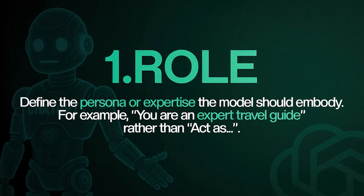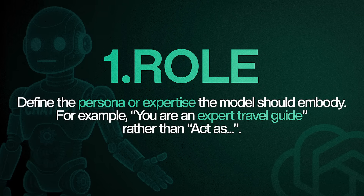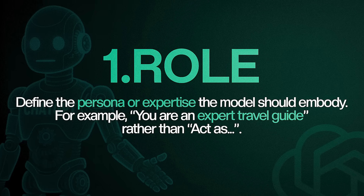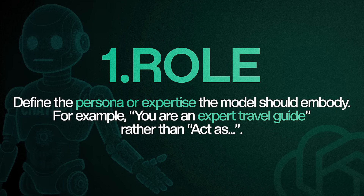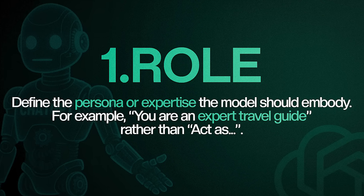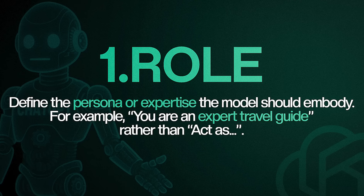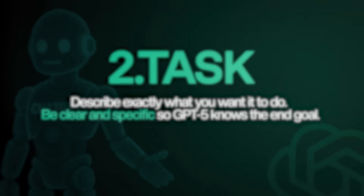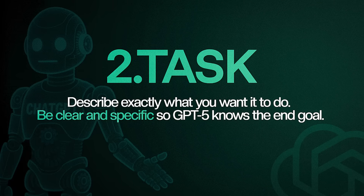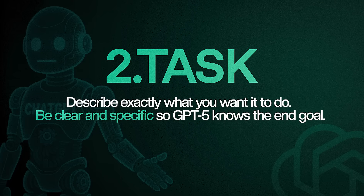It starts with the role — the persona or the expertise that you want GPT-5 to embody. For example, you can say that you're a travel expert. It's all about laying down exactly where you want GPT-5 to have its expertise. The second step is the task, where you actually lay down what you want GPT-5 to do, and you have to be very explicit in exactly how you want it to do it.